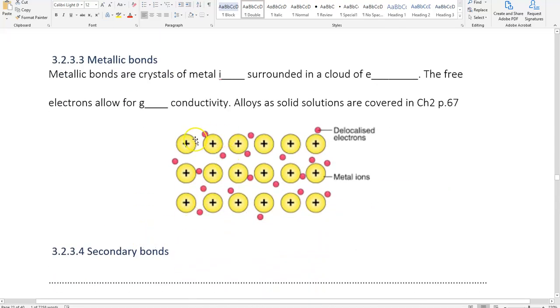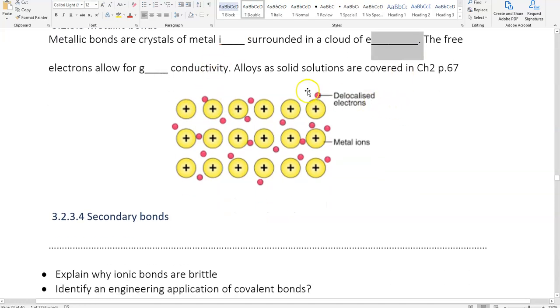Metallic bonds, the crystals of metal ions surrounded by a cloud of electrons. The free electrons allow for good conductivity. Alloys will be covered later when we talk about solid solutions. The idea is we have all these positive ions, and we have electrons that float around.